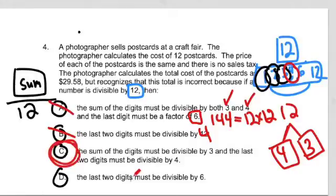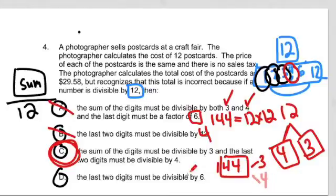And last, the last two digits must be divisible by 6. Well, again, if I had a number like 144, and we look at the last two digits, 144, the last two digits are not divisible by 6, yet 144 is divisible by 3, because 1 plus 4 plus 4 is 9, and 9 divided by 3 is 3, and that's the whole rule with the divisibility rules for 3. And the last two digits, like 4 and 4, 44, you know is divisible by 4. So, basically, that one's wrong, too.